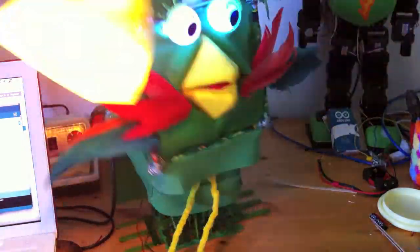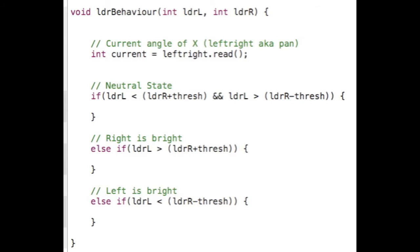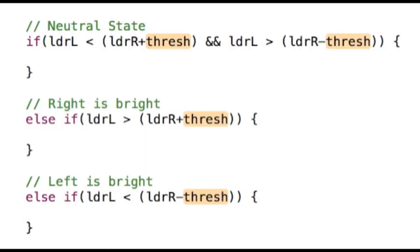The way we do this is by comparing the values of each sensor. The first case is whether both LDRs are equal. The second case is if the left LDR is greater than the right. And the third case is if the right LDR is greater than the left. We add in a threshold here to each case to control how much of a difference we want for there to be an effect.